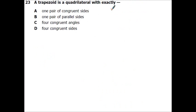A trapezoid is a quadrilateral with exactly, and this is just definition, it has exactly one pair of parallel sides.